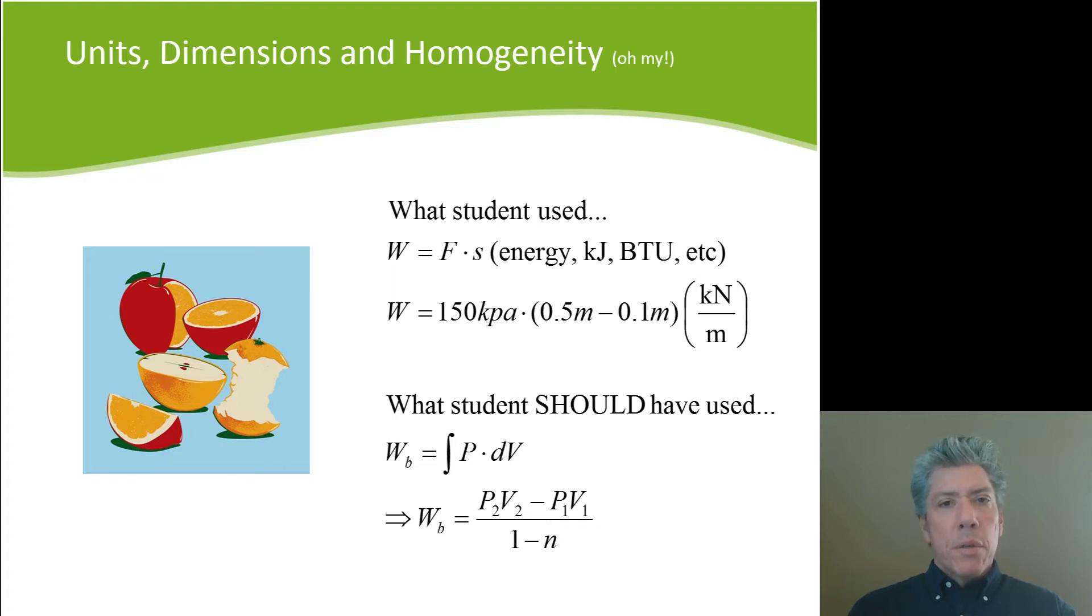Now, going back up to what the student actually used, you'll notice that kilopascals times meters, well, what is a kilopascal? Well, a kilopascal is a kilonewton per square meter, right? So it's thousands of newtons per square meter or thousands of pascals. Well, if we multiply by meters, one of the meters in the denominator, that meter squared, that area is going to cancel, and the units would be kilonewtons per meter rather than energy. And so the units actually are there to help you.